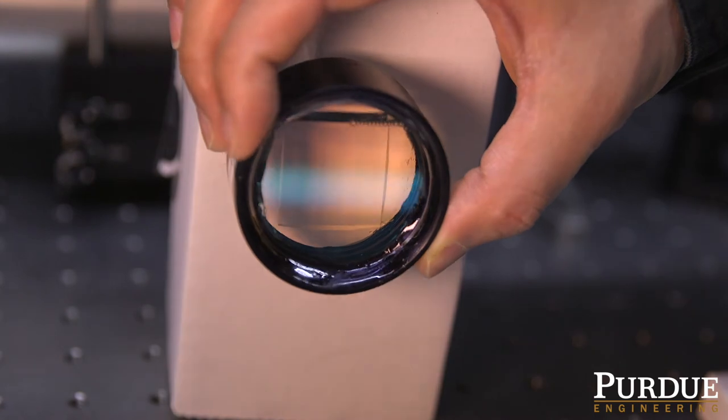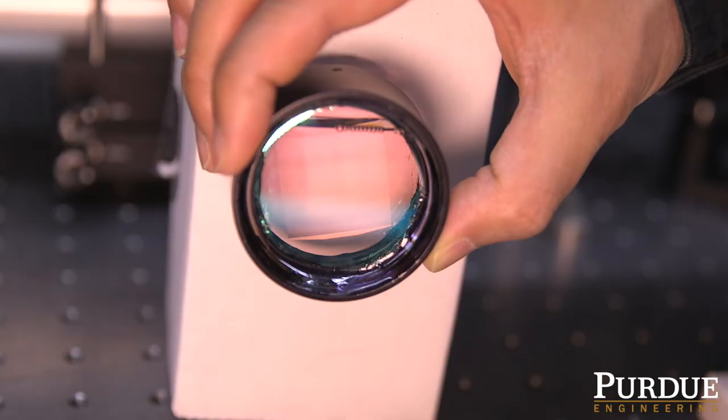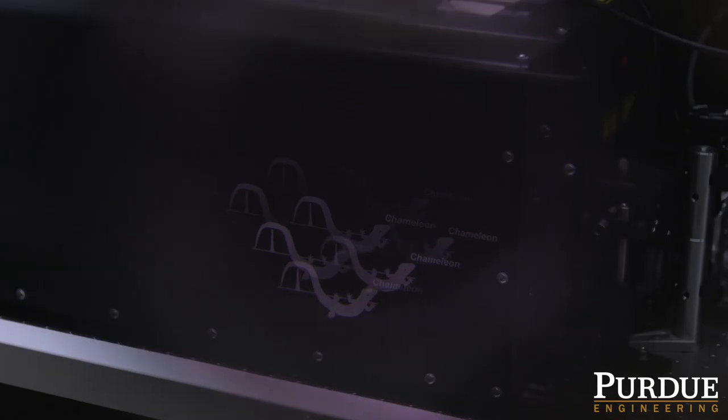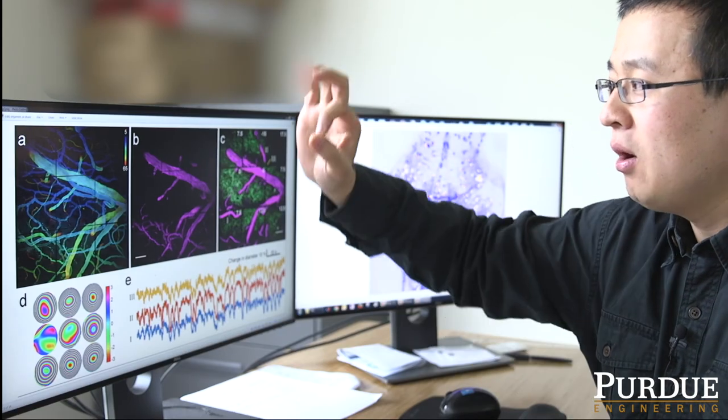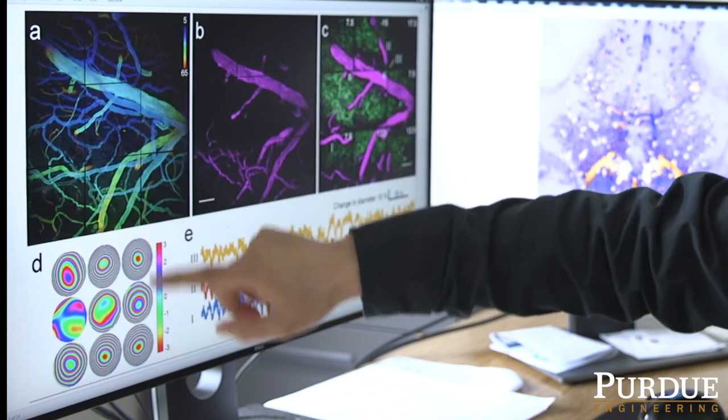The idea of multi-pupil adaptive optics is really that we wanted a prism array. So it's an array of tiny prisms, but each of the elements is tilting the beam to a different direction. Now, with this prism array, we have one individual pupil for each of those quadrants.